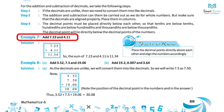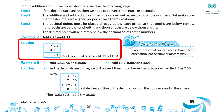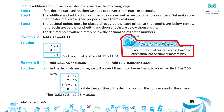Example 7: Add 7.23 and 4.11. Solution: 7.23 plus 4.11 equals 11.34. So the sum of 7.23 and 4.11 is 11.34. Remember to place the decimal point directly above each other and align the numbers accordingly.